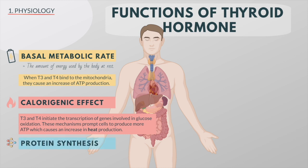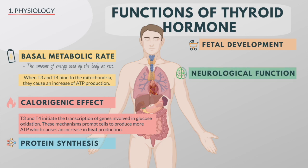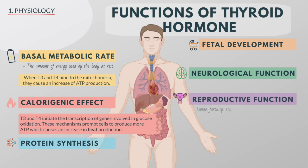Adequate levels of thyroid hormones are also required for protein synthesis and for fetal development and growth. They are especially critical for normal development of the nervous system and they continue to support neurological function in adults. The thyroid hormones have a complex relationship with reproductive hormones, and deficiencies can influence libido, fertility, and other aspects of reproductive function. Finally, thyroid hormones increase the body's sensitivity to catecholamines by upregulation of receptors in the blood vessels.